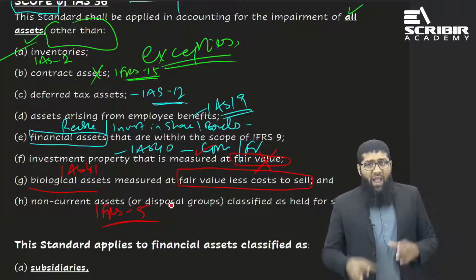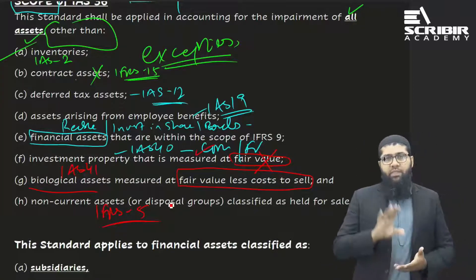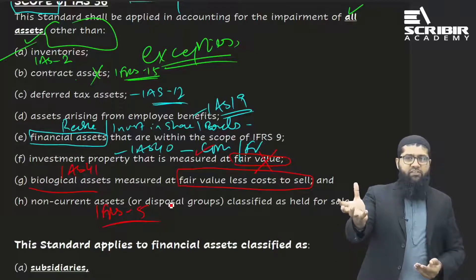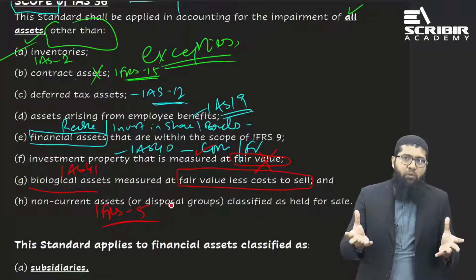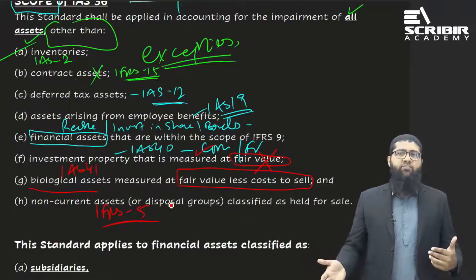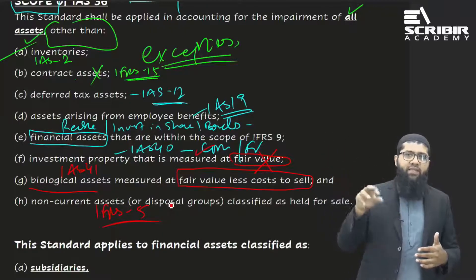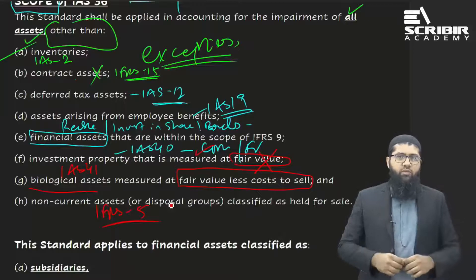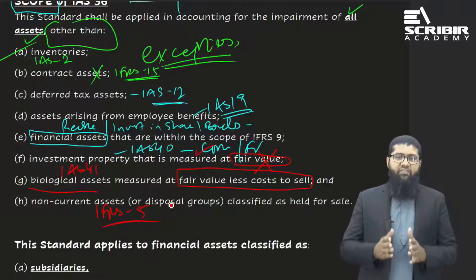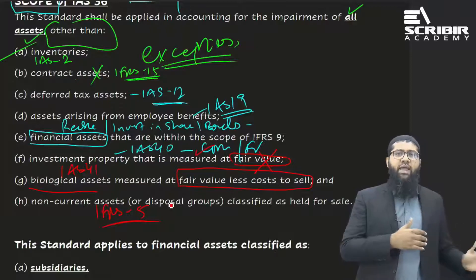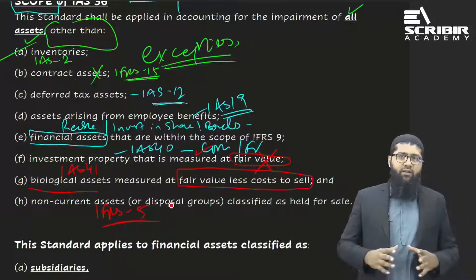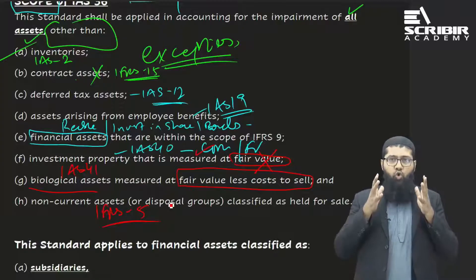It is important to understand the scope because students sometimes make the mistake of being presented with a discontinuing operation or disposal group — a group of assets and associated liabilities — that includes inventory and receivables, and they start allocating the impairment loss to those inventories and receivables. This is wrong, because IAS 36 does not apply to inventories (they fall under IAS 2) or to receivables (they fall under IFRS 9).